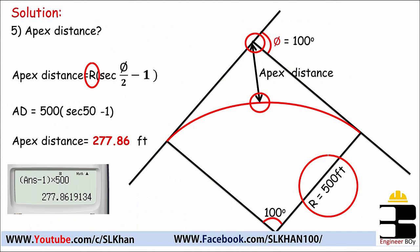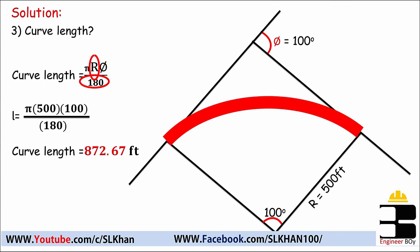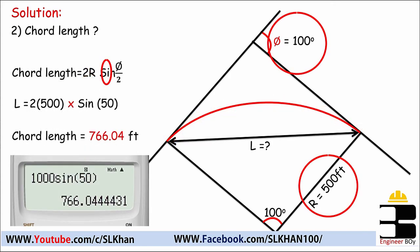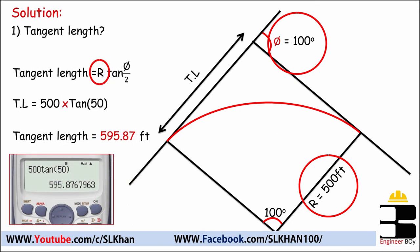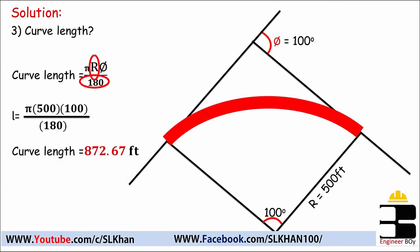If you have the apex distance, you can use: apex distance = R × (sec(Δ/2) − 1), and rearrange for R. If you have the middle ordinate, you can rearrange that formula. If you know the curve length, you can use the curve length formula and rearrange it for the radius. Similarly, if you have the tangent length, you can rearrange those formulas. These have all been explained in detail in the previous video in the same playlist.